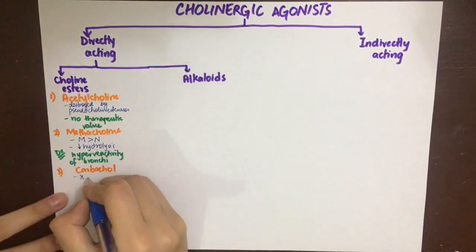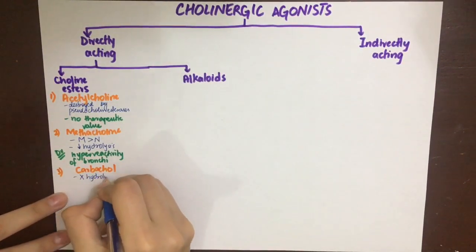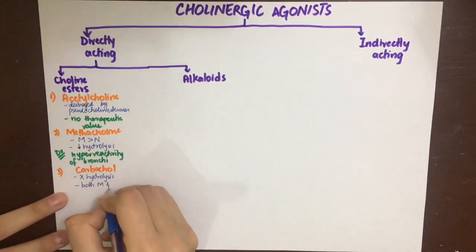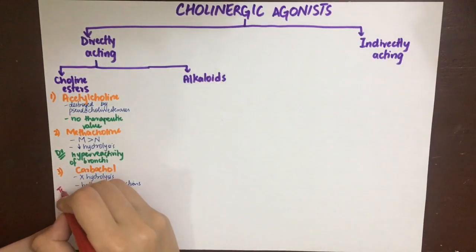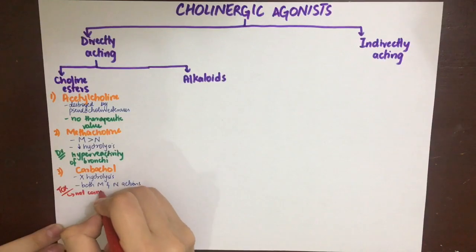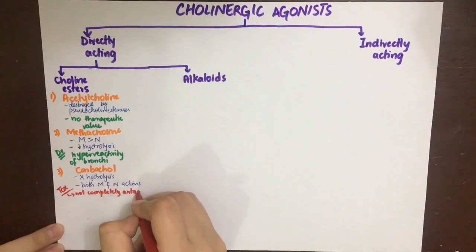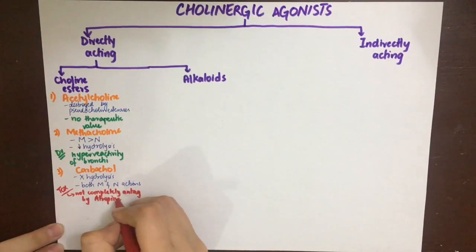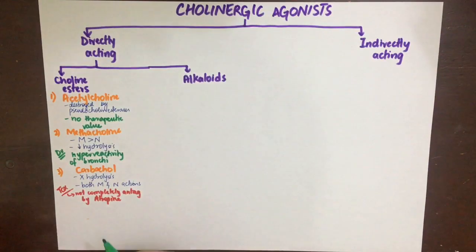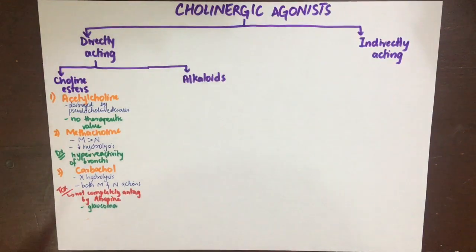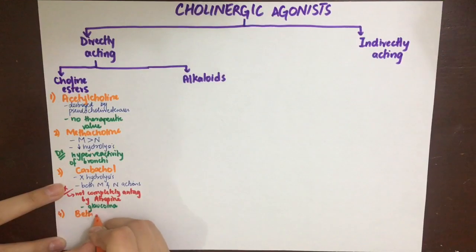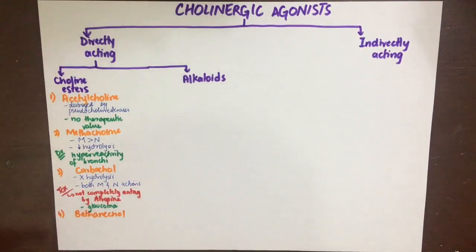The next choline ester is carbachol. Carbachol is resistant to both acetylcholinesterase and pseudocholinesterase enzymes, and it has both muscarinic and nicotinic actions. In case of poisoning or overdose by carbachol, its actions cannot be completely antagonized by the anti-muscarinic agent atropine. Carbachol is used in the treatment of glaucoma.